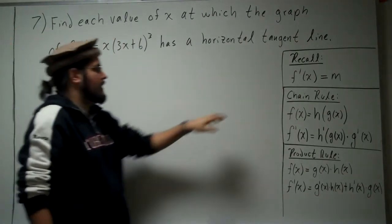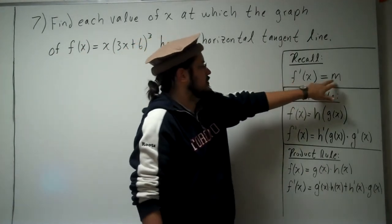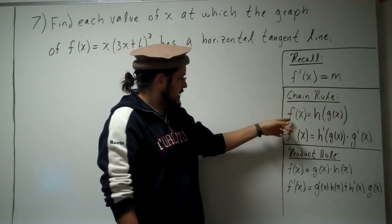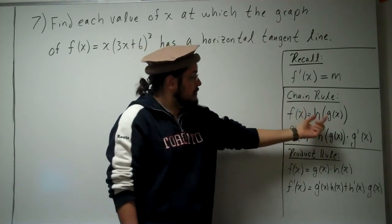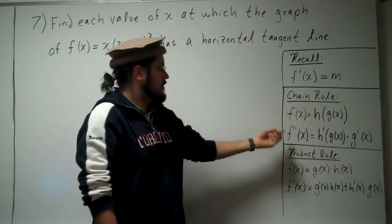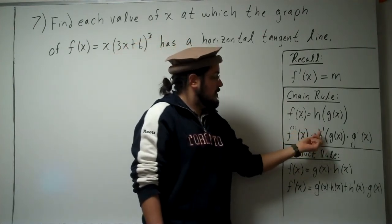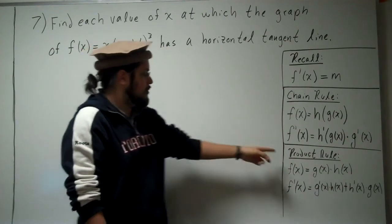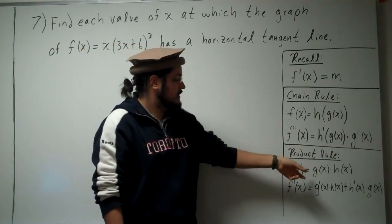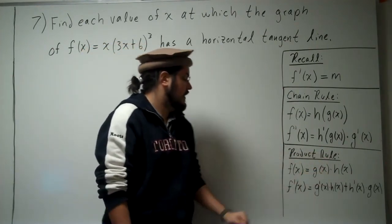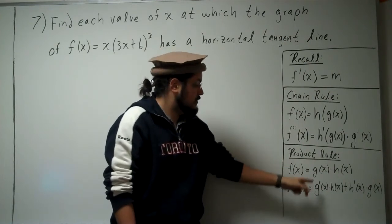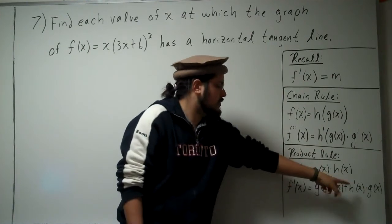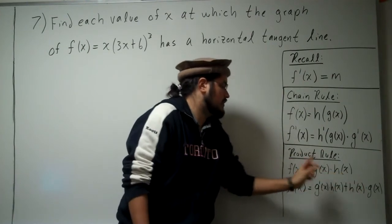Three things we need to recall. We need to recall that f'(x) is equal to the slope m — very important. The chain rule states that if you have a composition of functions, the derivative is the derivative of the outer function times the derivative of the inner function. The product rule: if you have a function times another function, the derivative equals the derivative of the first function times the second, plus the derivative of the second function times the original function g.